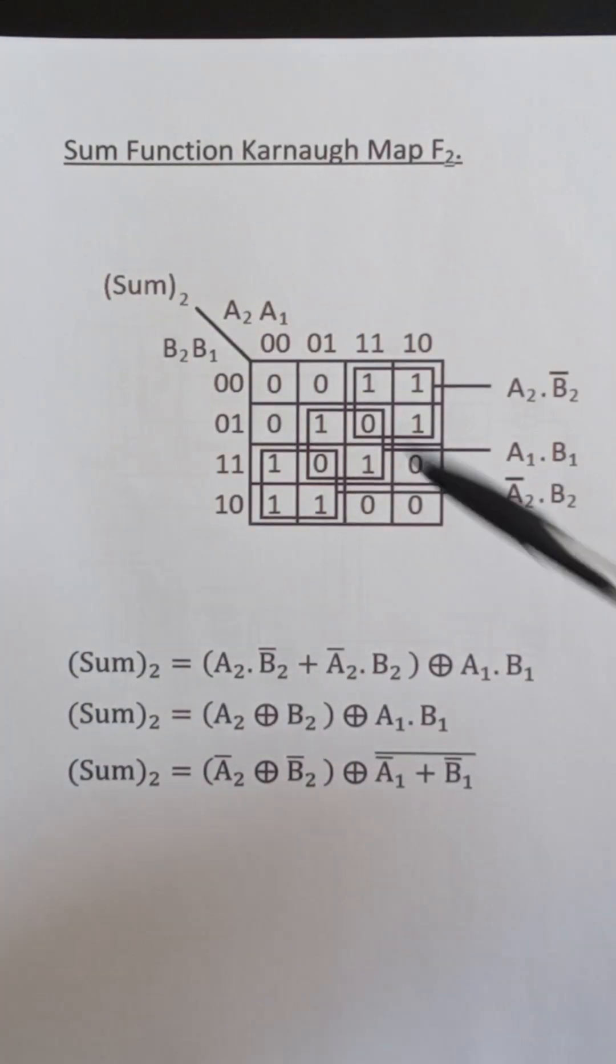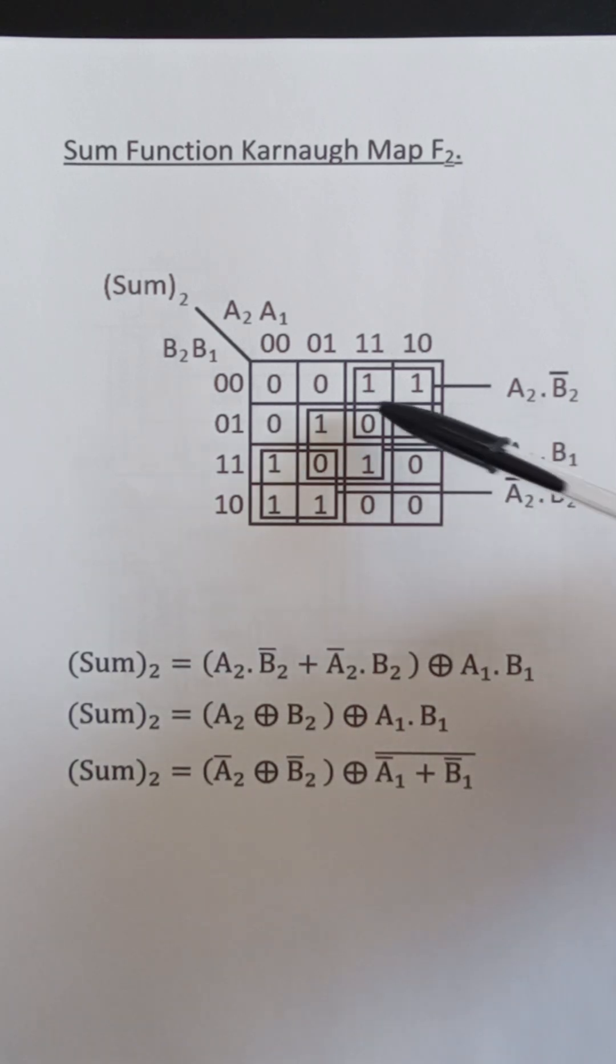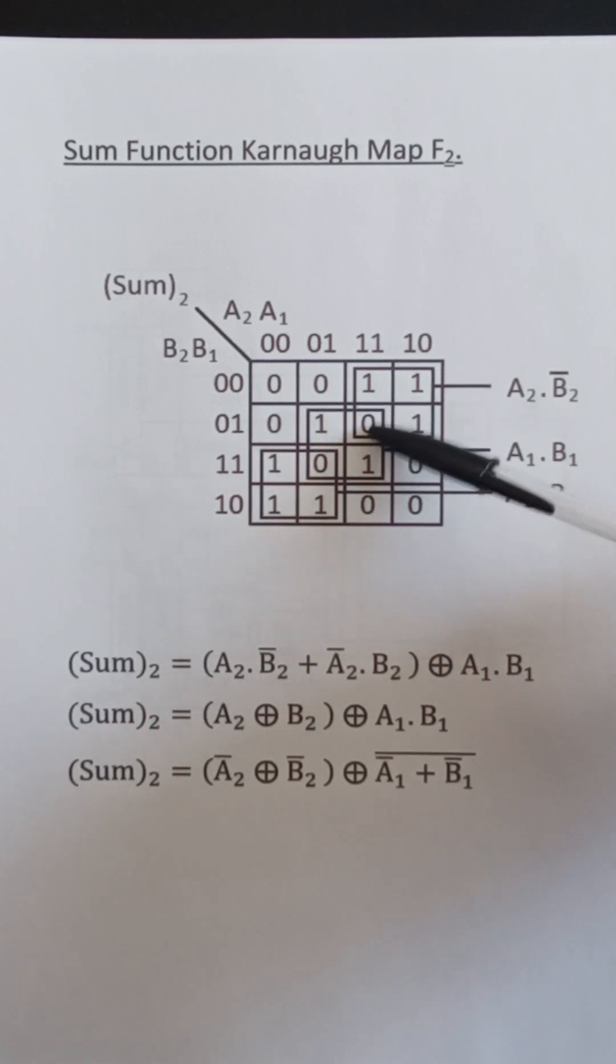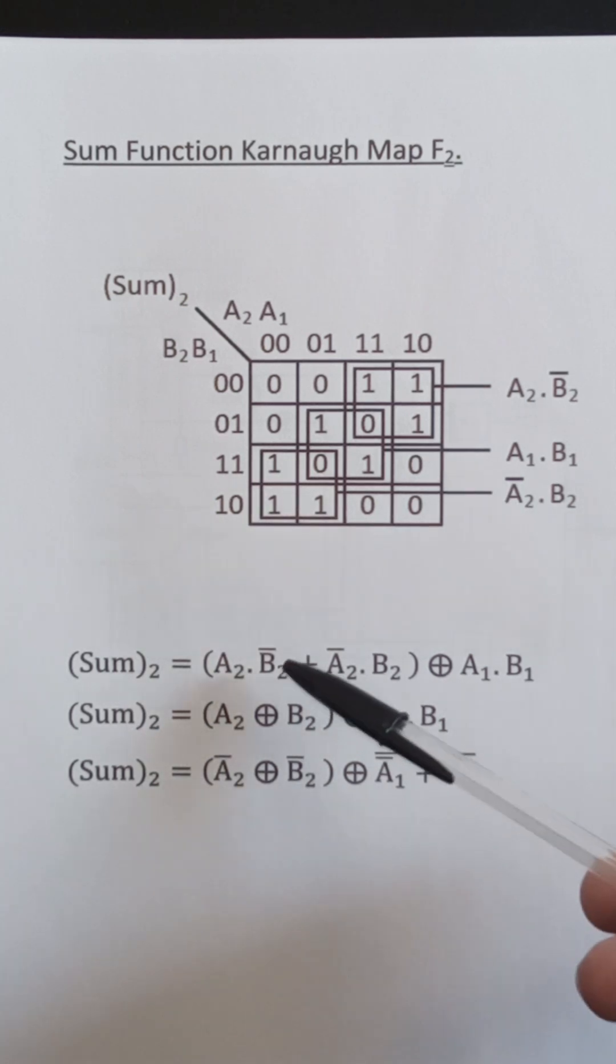Here we have the Karnaugh map for sum2. This loop here is A2 and not B2. This loop here is not A2 and B2 and this loop here is A1 and B1. Now I'm combining these expressions with the OR function and I'm combining the middle loop and B1 with the exclusive or function. The rule is for an exclusive or function if it's looped an odd number of times it's a 1 and if it's looped an even number of times it's a 0. So here we have 2 loops so that's a 0, 2 loops there so that's a 0 there and the rest are 1 looped. So we have A2 and not B2 or not A2 and B2 exclusive or A1 and B1.